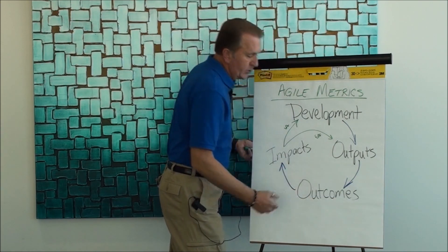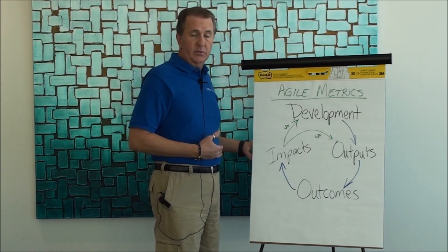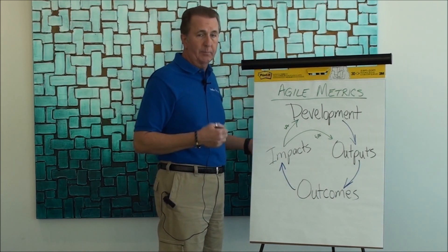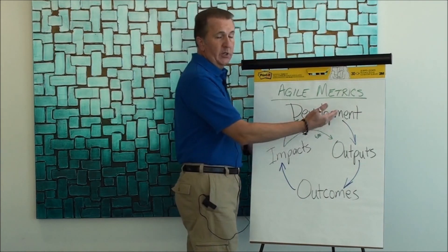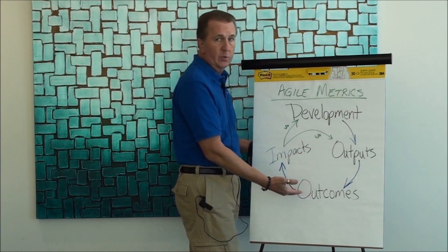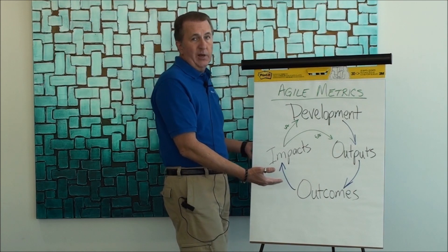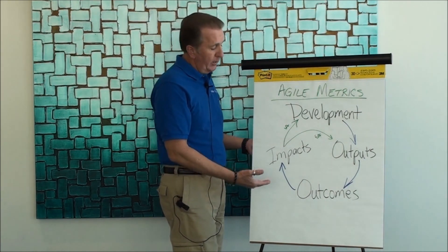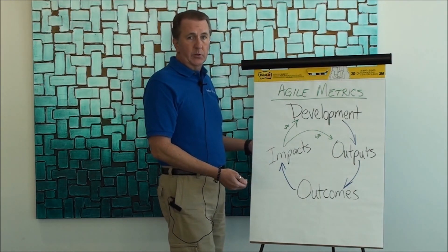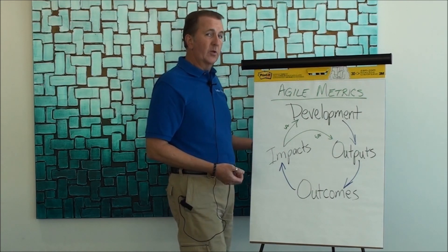Examples of outcomes could be things that affect users and customers. For example, if we let production defects slip into the production environment, that's an outcome. It's a negative outcome. Nevertheless, it affects users and customers. It's something that we probably want to be very thoughtful of.